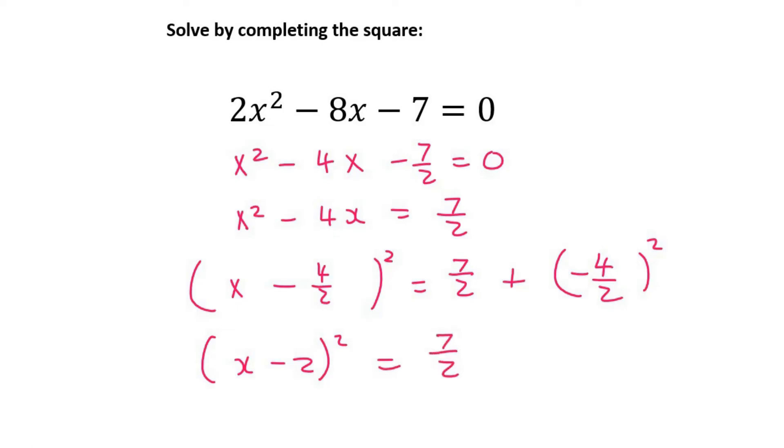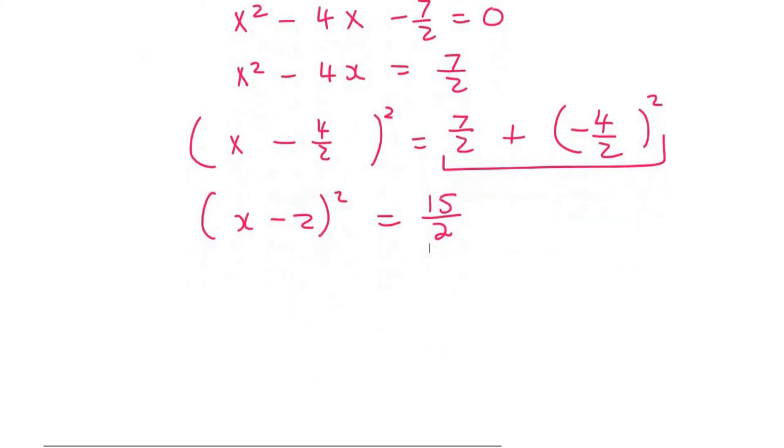And then, on the right-hand side, we're just going to go type all of this in on the calculator exactly as you see it. And that's going to give us 15 over 2. If you want to write 7.5, you can.